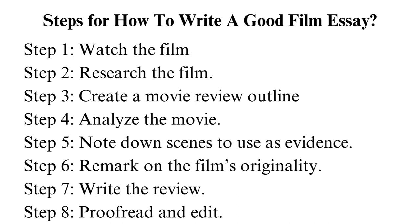You can start analyzing the movie once you have understood it well. Thoroughly evaluate it from the start to the end. Step 5 — note down scenes to use as evidence. Take notes of the scenes you will use as evidence when you re-watch the movie for the second time. Step 6 — remark on the film's originality. Identify the uniqueness of the movie. However, if the film is a standard feature that uses conventional strategies, you may as well mention it in the review paper.